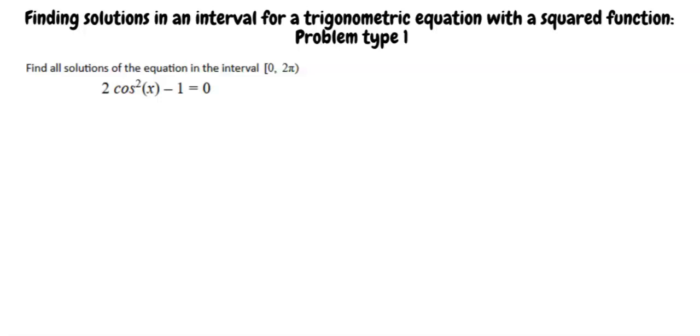This is an example video for the topic, finding solutions in an interval for a trigonometric equation with a squared function, problem type 1. Let's solve this problem. Find all solutions of the equation in the interval 0 to 2π.